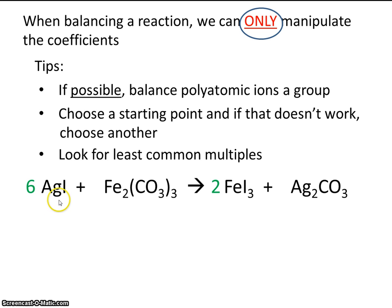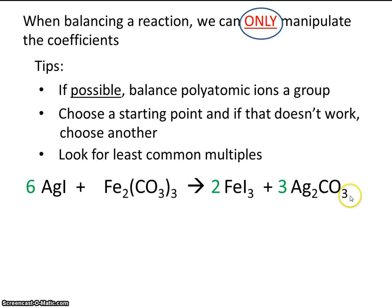So by making six iodines, we also made six silvers. So now we need six silvers on the right, so we need a coefficient of three. So we made three carbonates — remember, carbonate is CO₃. Looks like we also have carbonate on the left as well. So we have three carbonates on the right, and we have three carbonates now on the left, because this is carbonate and we have three of them. So this equation is balanced.